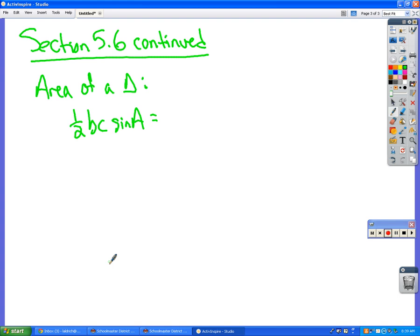Or, if you know different sides and angles, it could be one half ac sine of b. Or, you guessed it, one half ab sine of c. Any one of those will give you the area of a triangle.